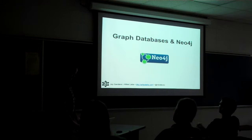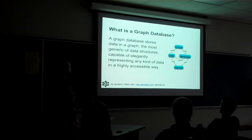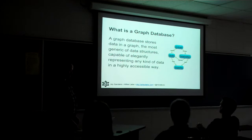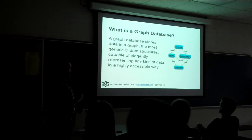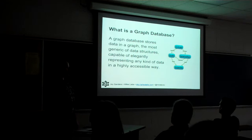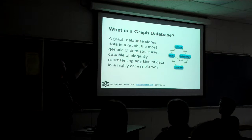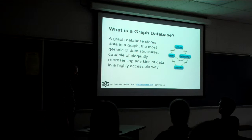Starting with graph databases — has anyone here worked with them? They're becoming more and more common. A graph database is a different type of database than a relational database, and it's a different way of visualizing data, but it's still the same idea: you can query, store information, it's saved on disk, they persist. Neo4j is actually capable of scaling to a very large scale. The most common example we all know is Facebook, which is a massive graph database of some kind.